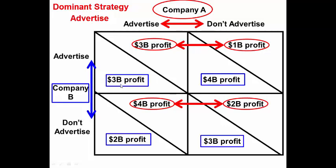If Company B advertises and Company A advertises, Company B brings in three billion dollars in profit. But if Company B doesn't advertise while Company A does, Company B is worse off. On the other side, if Company B advertises but Company A doesn't, Company B earns four billion dollars, while if neither advertises, Company B only brings in three billion dollars.